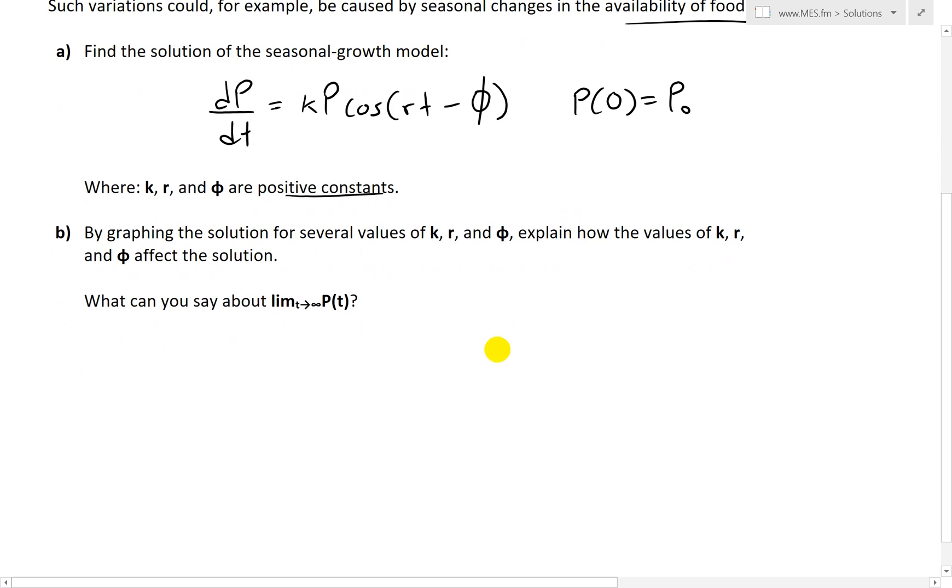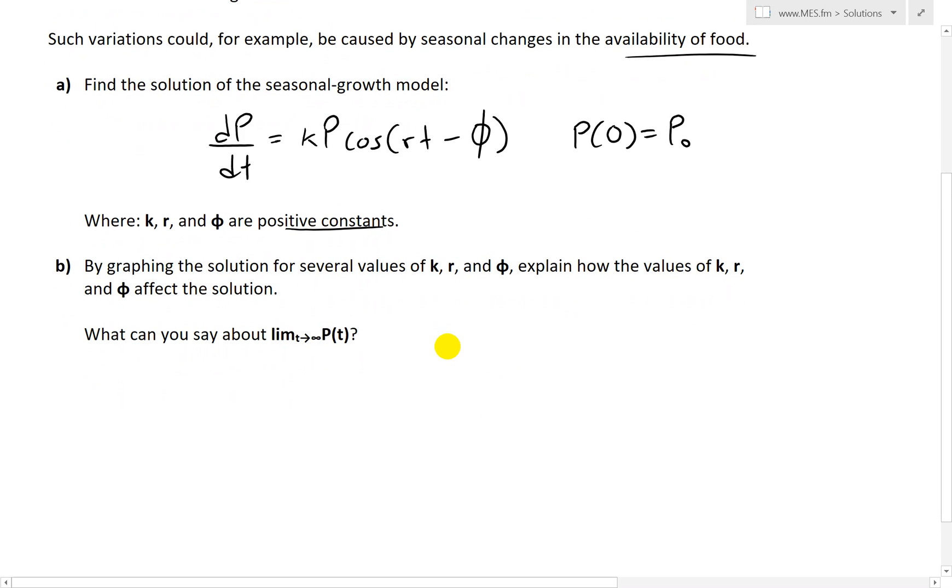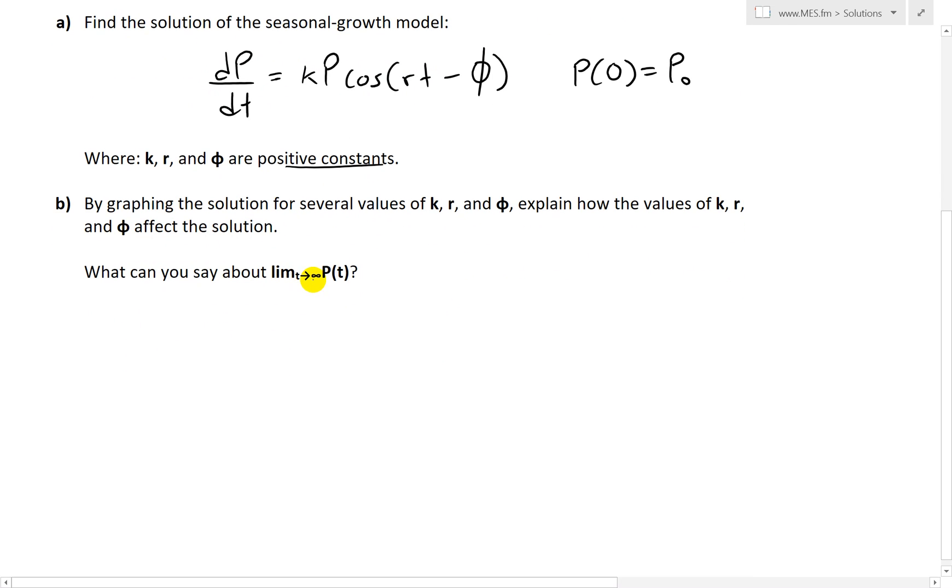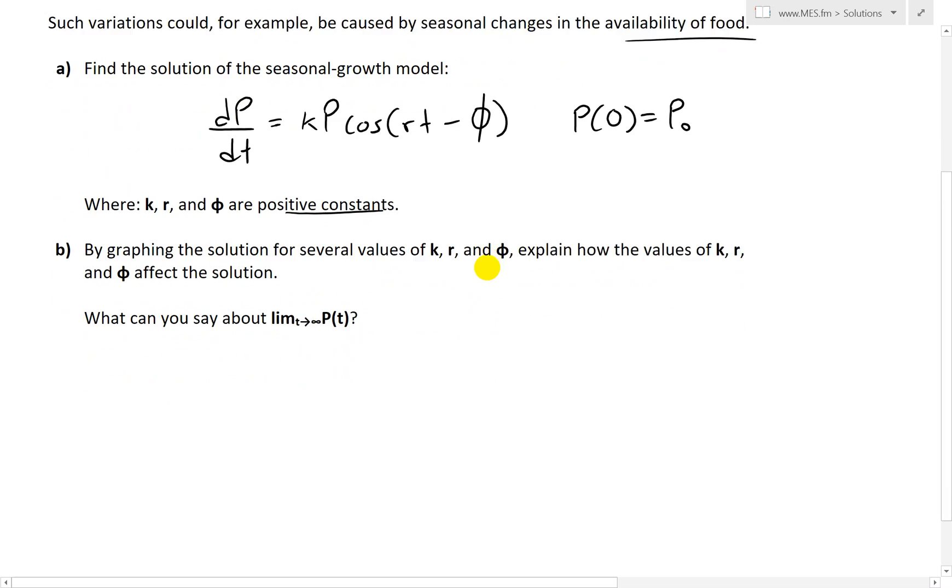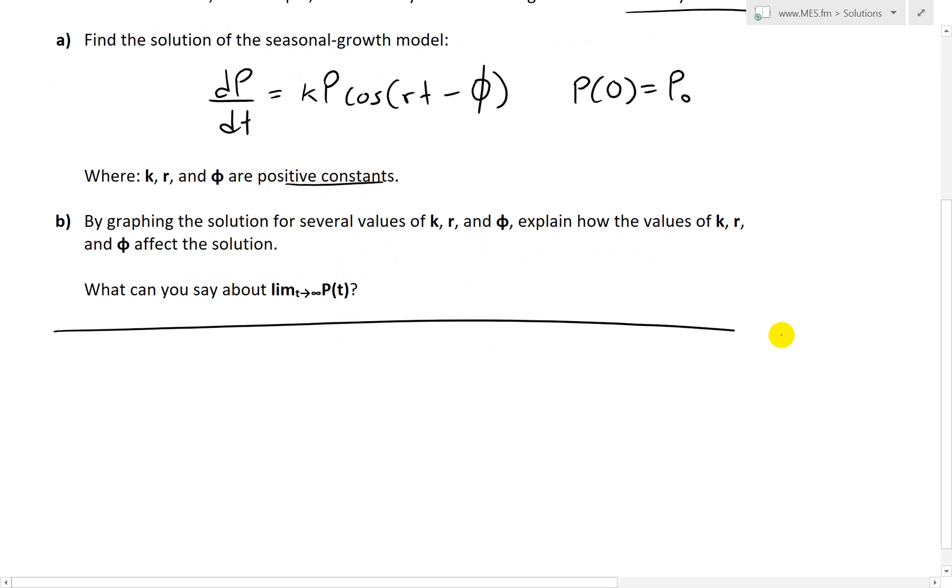And then where we are given the initial population, P at time 0 equals to P0 or P subscript 0. So where these symbols K, r, and phi are positive constants. Just keep that in mind. And then part B involves graphing these for different values and looking at the limit as T approaches infinity. We'll go over that in the next video. So let's find the solution to this.